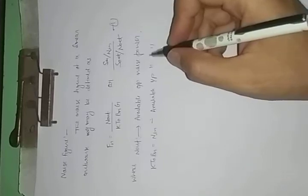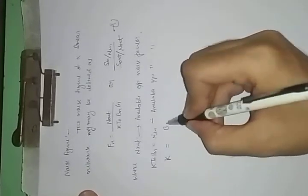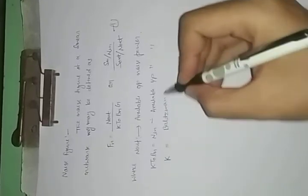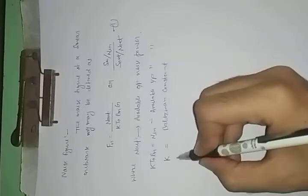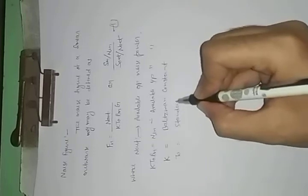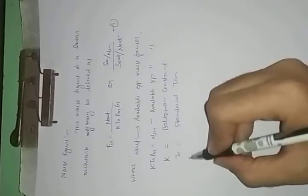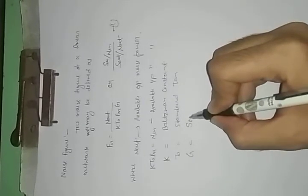K is the Boltzmann Constant, and T not is the Standard Temperature, and G is the Available Gain.